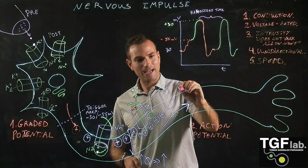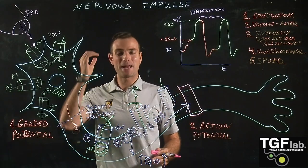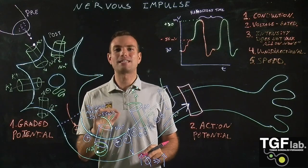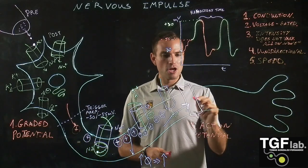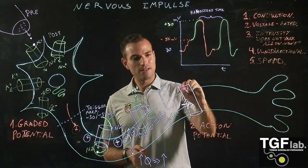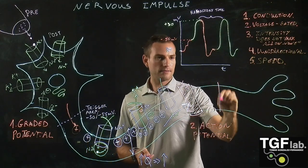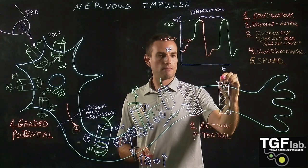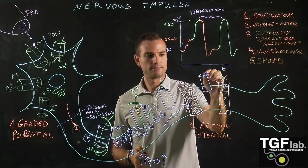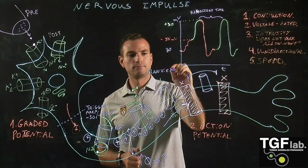Myelin is produced by different cells depending on the nervous system region. In the peripheral nervous system, the myelin sheath is secreted by Schwann cells, while in the central nervous system it is secreted by oligodendrocytes. The myelin sheaths act as insulation — there are no ion channels where the myelin is present. The only ion channels are located between the two myelin sheaths, in a space called the node of Ranvier.